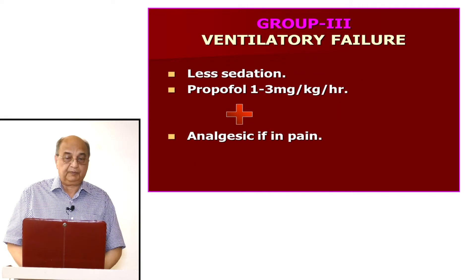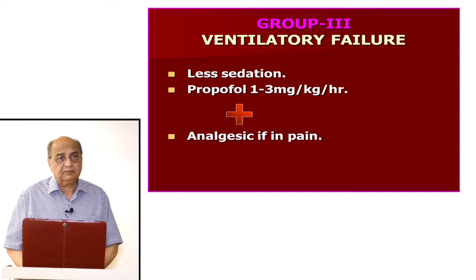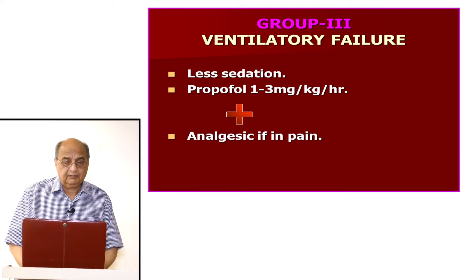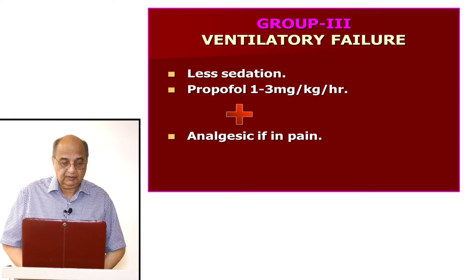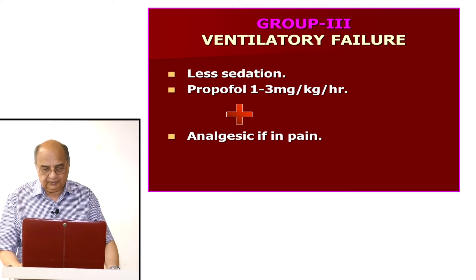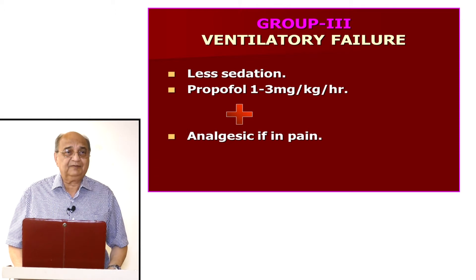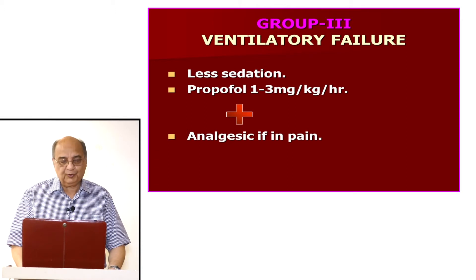Group three is ventilatory failure patients. These patients need very little sedation as they are already in respiratory failure. Propofol can be given at 1 to 3 milligrams per kilogram per hour. Analgesics can be added if the patient is in pain — morphine or other agents — but you must be very careful, because if the patient is already hypercapnic, they are already sedated, so you do not need to give too much sedation.